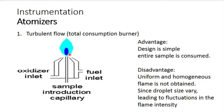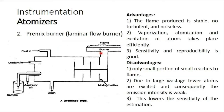Advantages of the total combustion burner: design is very simple, and the entire sample is consumed so a large quantity of sample is present in the flame. Disadvantages: a uniform and homogeneous flame is not obtained because droplet sizes vary, and since all droplets — large and small — enter the flame without any size selection, the signal is not uniform.